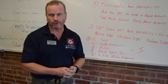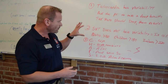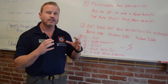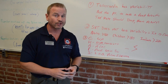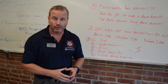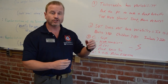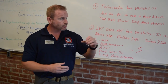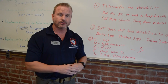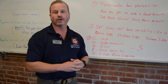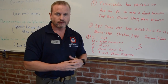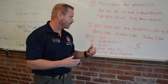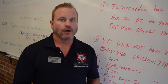We synchronize cardiovert. SVT responds at smaller joules, so start at 50 joules, push the sync button, get the little diamonds over your QRS, hold the shock, and snap them out of it. They usually respond very well.